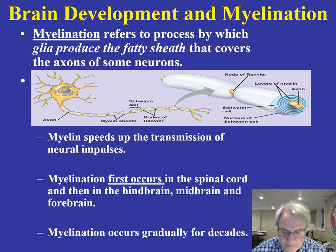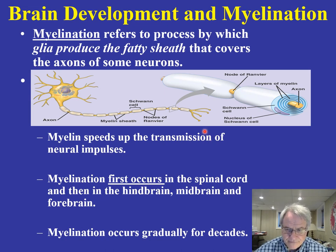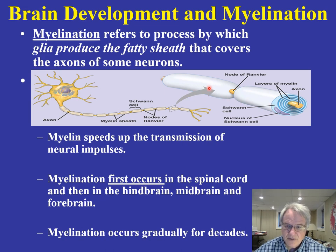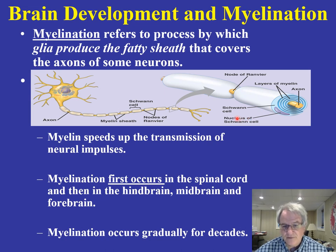Myelination involves glial cells wrapping around the axon in a fatty sheath, helping to speed up neurotransmission. Myelination occurs initially in the spinal cord, then moves to the hindbrain, midbrain, and forebrain. This myelination process continues for the first 30, 40, even 50 years of life.